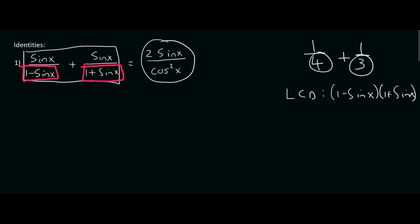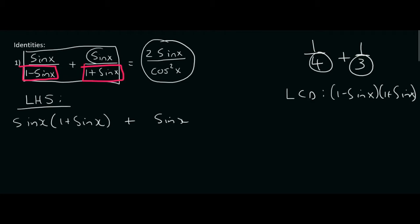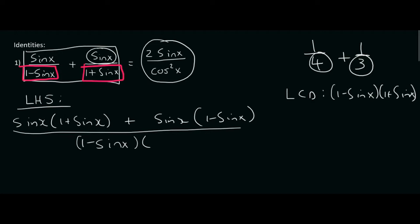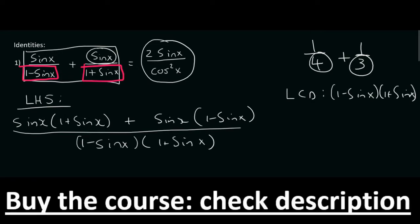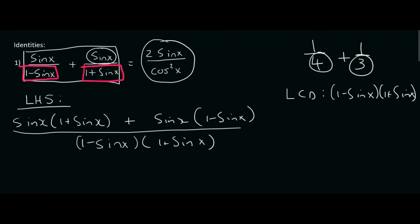So what that means is that the sin x at the top — I'm going to work on the left hand side — that sin x at the top is going to be multiplied by one plus sin x, then plus sin x, because this sin x over here is going to be multiplied by one minus sin x. All of that is written over the common denominator, but you never multiply out the common denominator — you leave it in bracket form. Now we can simplify the top by expanding: that gives us sin x plus sin squared x plus sin x minus sin squared x, and the bottom part stays the same.